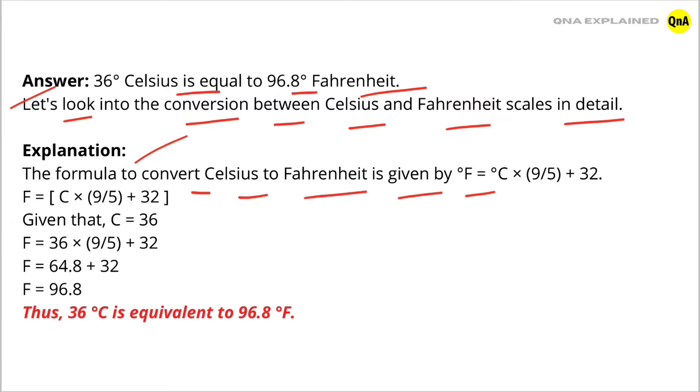F = 36 × (9/5) + 32, which is equal to 64.8 + 32. So F = 96.8. Thus, 36 degrees Celsius is equivalent to 96.8 degrees Fahrenheit.